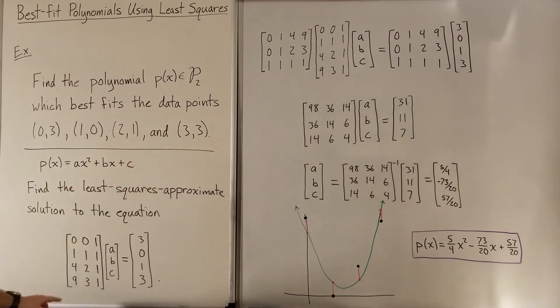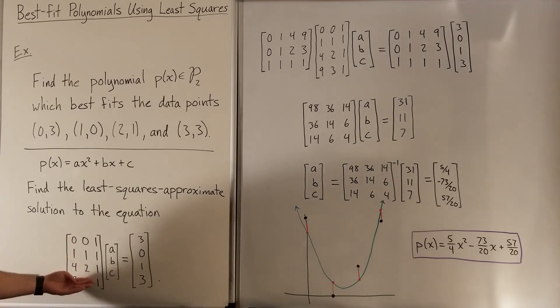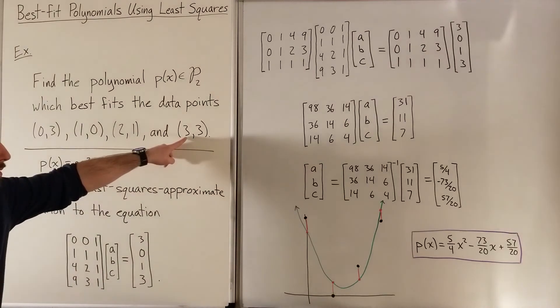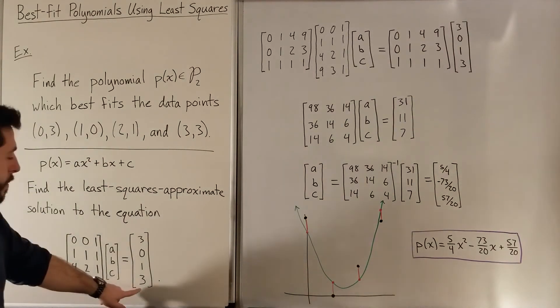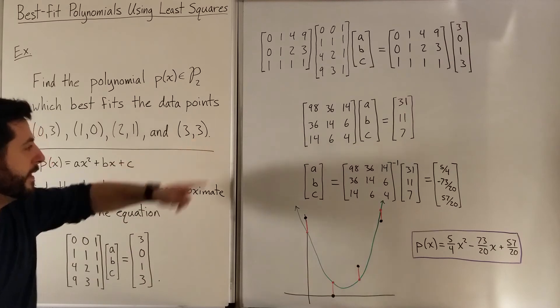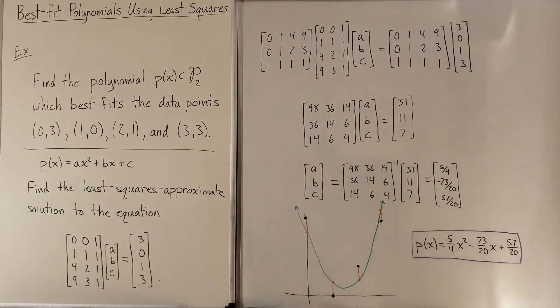So this fourth entry here is going to correspond to the x values raised to power. So this 9 is the x value 3^2, and then 3^1, and then 3^0. So just like it was before, the top three rows are literally the same. And then we have this new row corresponding to this x value 3 here. And then the y value is also 3 corresponding to that 3 there.